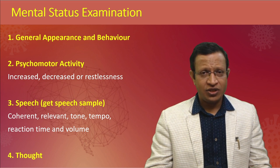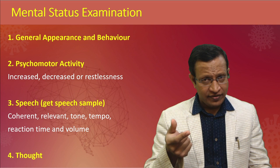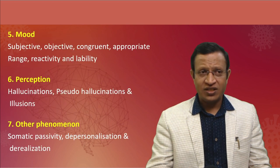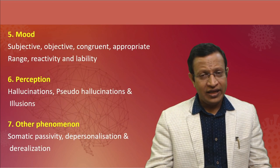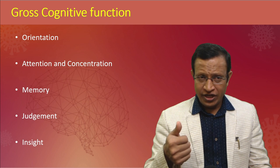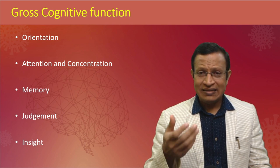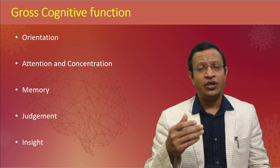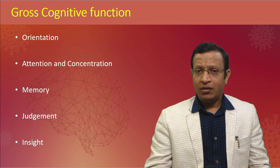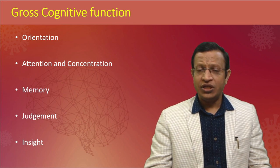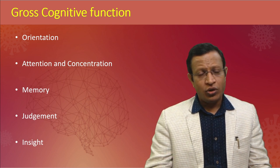For mental status examination, look at general appearance and behavior, psychomotor activity, whether rapport is built, speech, thought process, mood, perception, and other phenomena. Also grossly check cognitive functions — basically orientation, attention and concentration, memory, judgment, and insight. Younger children may not give the chronological order of memory events, but if they can give good information about school, that captures recent and remote memory.